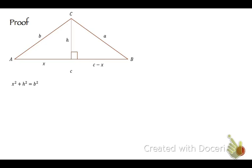Now, X squared plus H squared equals B squared just from the Pythagorean theorem right there. Same thing with this right triangle. So that would be C minus X squared plus H squared equals A squared. I'm going to solve both of those for H squared. So that's H squared equals B squared minus X squared. This one's H squared equals A squared minus C minus X squared.